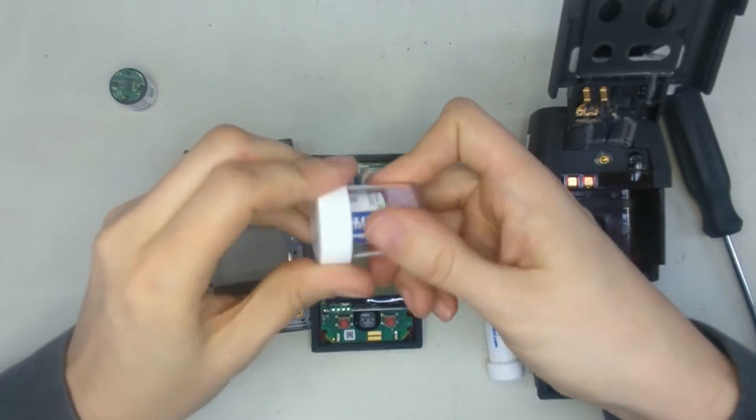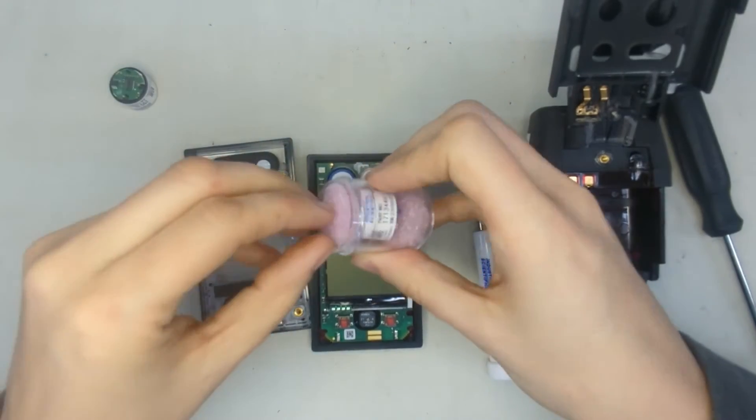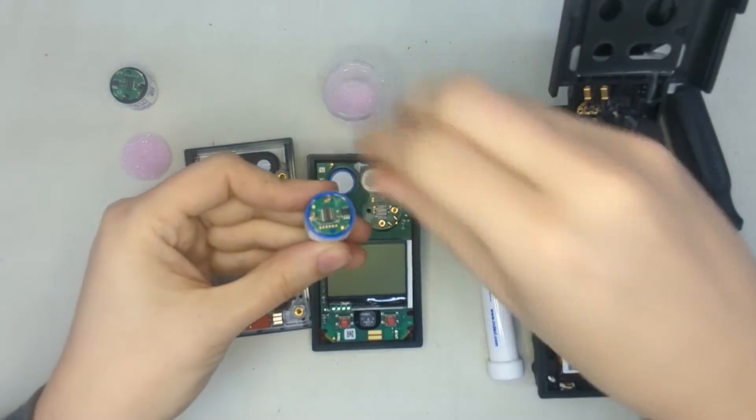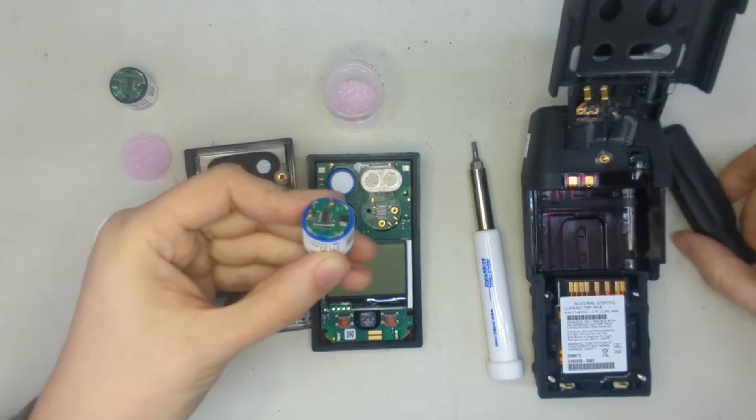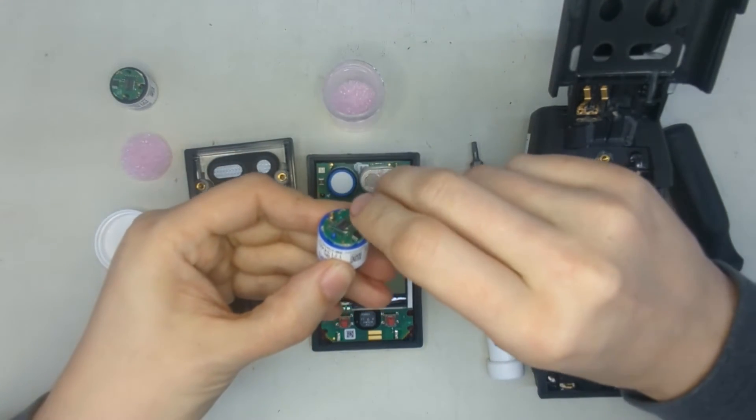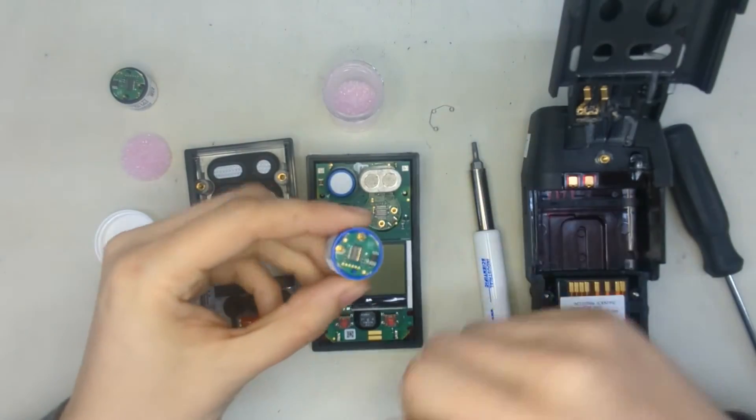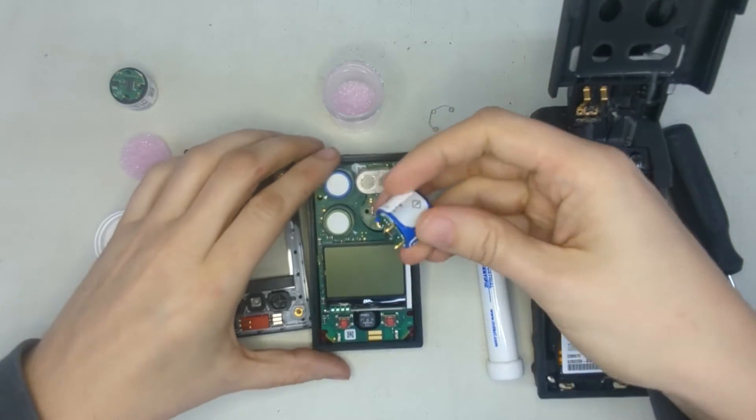We're going to go to our new sensor here, open it up. Now this part is very, very important. You have to remove this shorting clip right here on the bottom. So all you need to do is pop that right off. And if you don't do this, the monitor won't function properly. So make sure you do it.